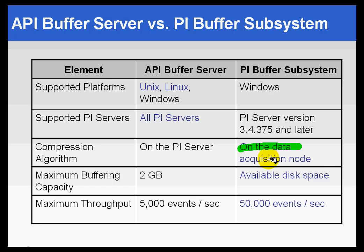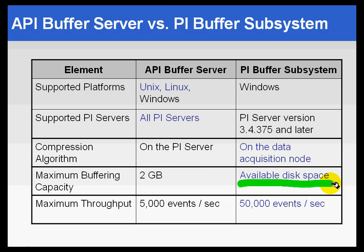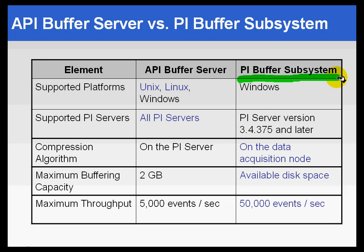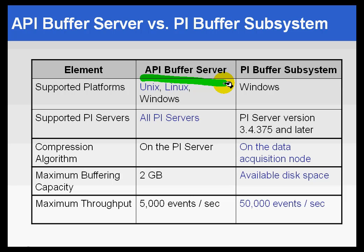The compression algorithm is done on the data acquisition node with the PI Buffer Subsystem — we send all snapshots but flag those that need to be archived, so data is exactly the same on all servers in the collective. With traditional buffering, compression is all done on the PI Server. There is no maximum buffering limit on the PI Buffer Subsystem like there is on the API Buffer Server, and the data throughput for buffering is tremendously better in the PI Buffer Subsystem — 10 times as great. From this point, the balance of what we'll do in this class will be using the traditional API Buffer Server.